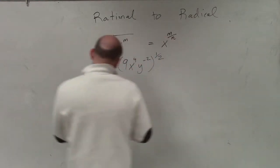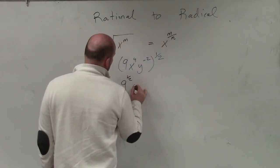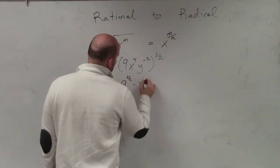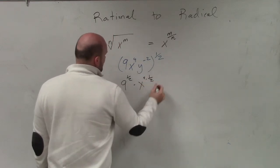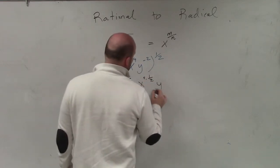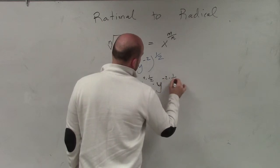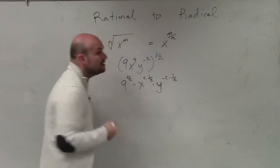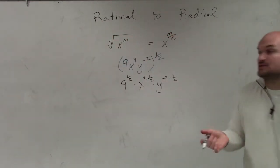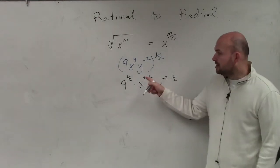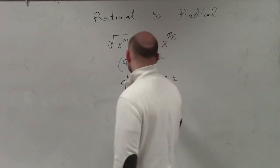So therefore, this can now be rewritten as 9 to the 1/2 power, times x to the 4 times 1/2 power, times y to the negative second times the 1/2 power. Now, what I think is important when multiplying rational expressions, especially when you have whole numbers as your exponents, is to rewrite them as fractions.